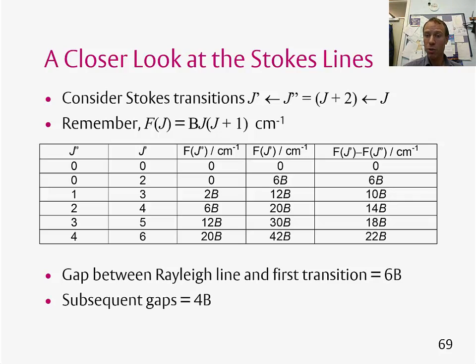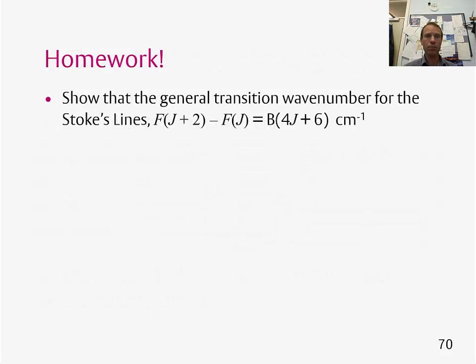So this means we can automatically work out where the lines are going to come in a spectrum, and once you know where the lines are in a spectrum, if you measure a spectrum, we can get the rotational constant B. Some homework for you is to show that the general transition wavenumber for the Stokes lines can be written using this expression here. And that's the end of topic eight.